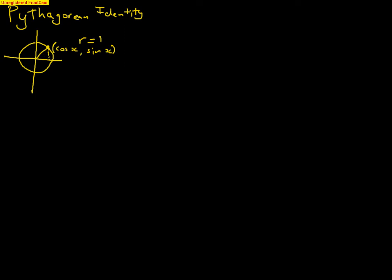So that x length is cos x, and that y length is sin x. So we have something that looks like a right angle triangle, where this is cos x, and this over here is sin x, and our radius being 1.